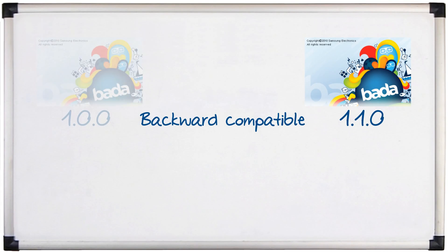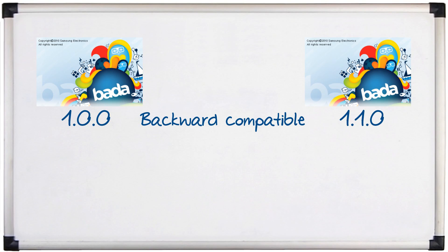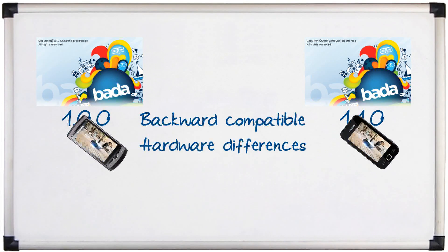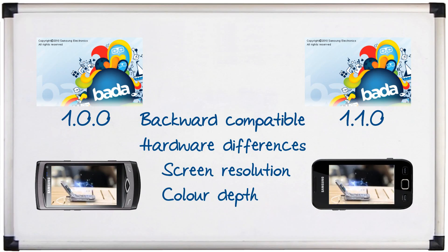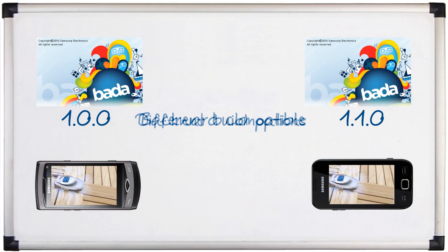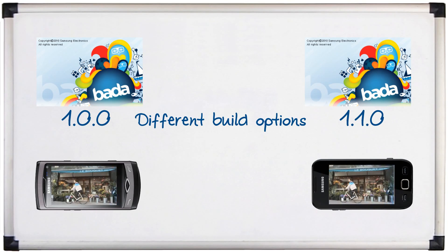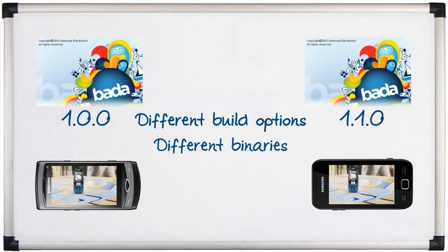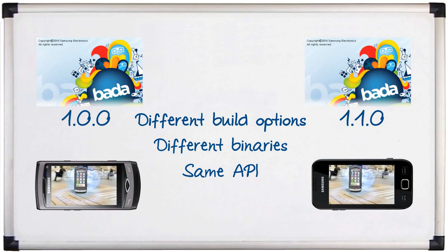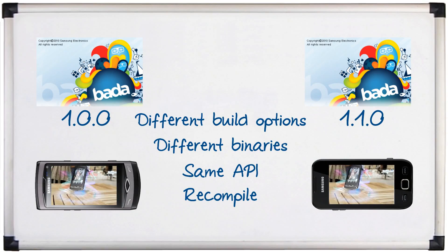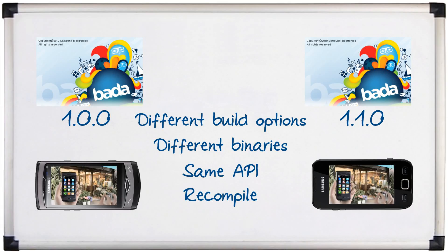The API of SDK 1.1.0 is backward compatible with the old version of the SDK. There are hardware differences between Wave devices that support different versions of the SDK, such as screen resolution or colour depth. To address this, different build options are used to create the binaries. Binaries for the Wave S8500 will not run as-is on new devices. However, because the API is the same, you can recompile your application specifically for these new devices and it will work as expected.